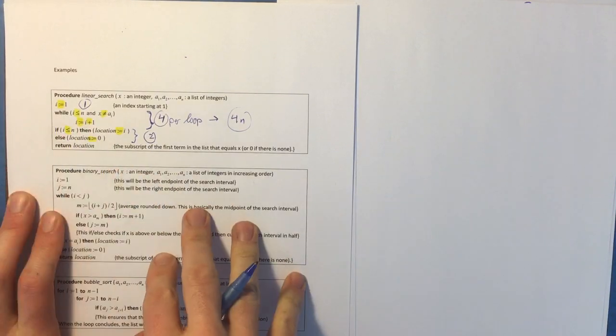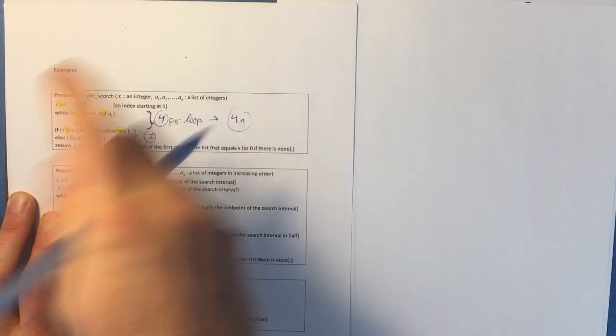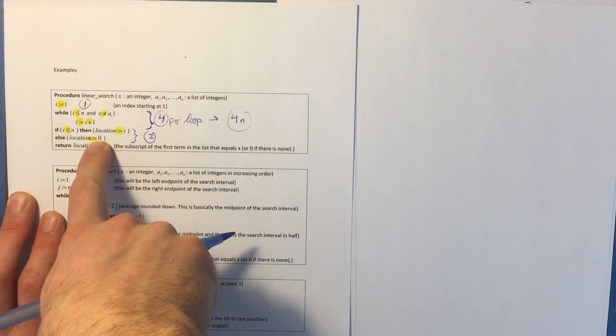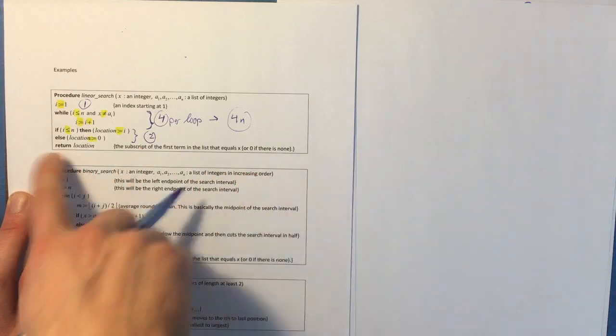You have one situation or the other. If you really get to the end and you never found the element, then that's going to be the second one. The else location is assigned to zero and then we have a return. So I'm not going to count the return.